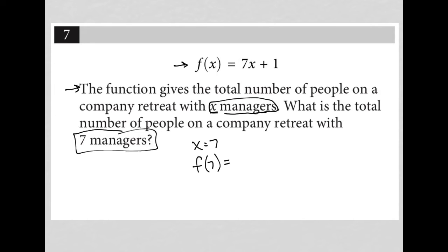So f of 7 is equal to 7 times 7 plus 1, right? Instead of 7 times x, we now know that x is 7. So in essence, all I've done is replace x with 7 in the two places we have it in the original function.